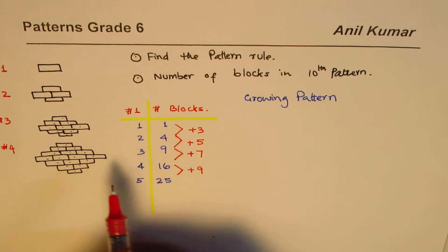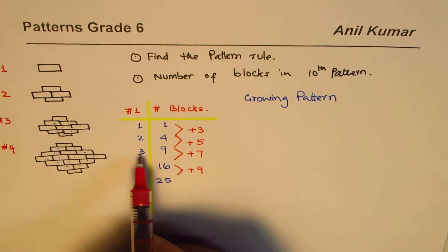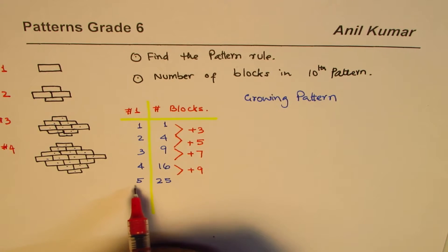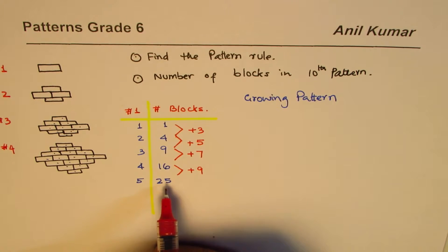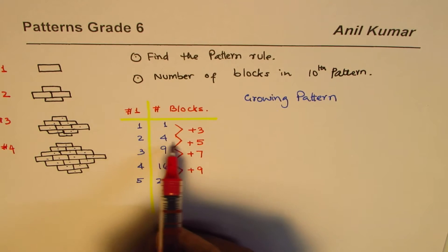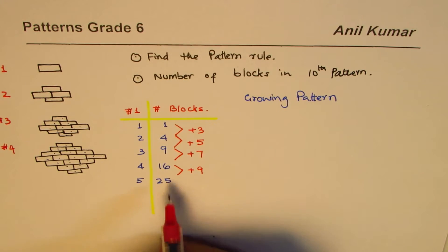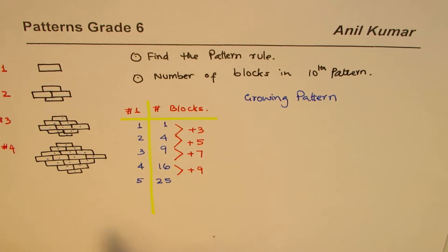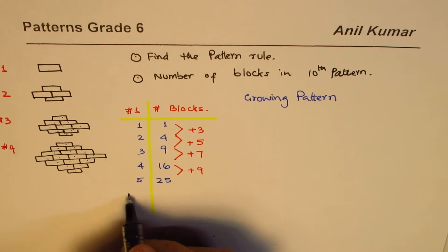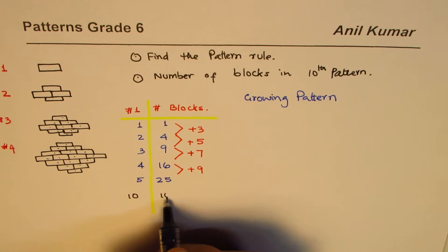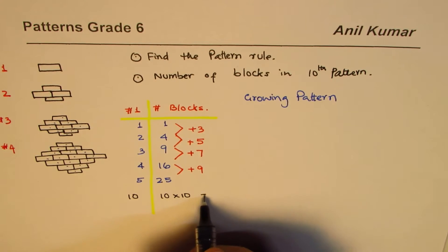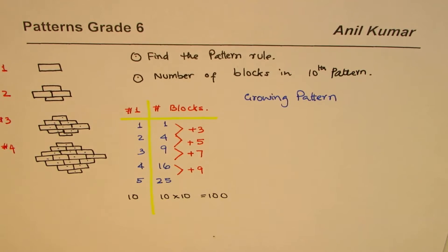Looking at the values: design one has one block, design two has four, design three has nine, design four has sixteen, design five has twenty-five. This is the square pattern — three times three is nine, four times four is sixteen, five times five is twenty-five. So in the tenth pattern we should have ten times ten, which is one hundred.